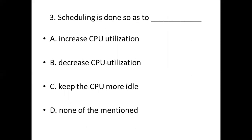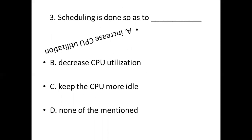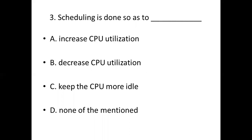Third bit. Scheduling is done so as to dash. Option A: Increase CPU utilization. Option B: Decrease CPU utilization. Option C: Keep the CPU more idle. Option D: None of the mentioned. Answer: Option A, Increase CPU utilization.